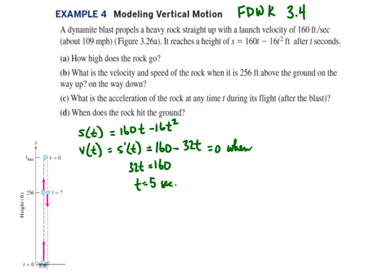So when time is equal to 5 seconds, the rock will reach its highest point, and all we need to do is plug 5 seconds into the position function to find out how high it was at that particular point in time. We plug in t equals 5 into the position function to get 800 minus 400, or 400 feet. And that is the highest point that the rock reaches.